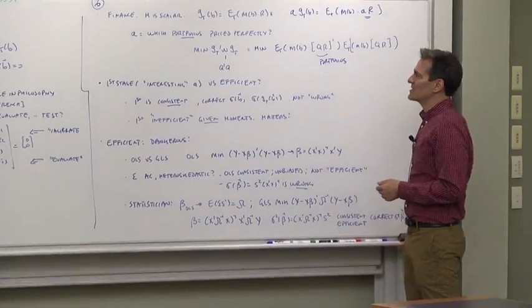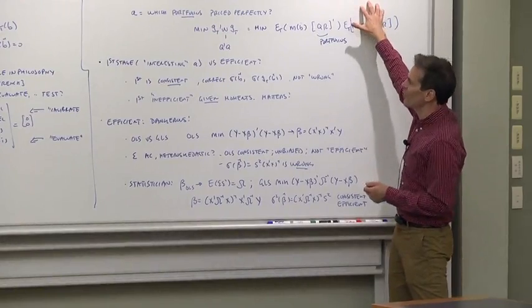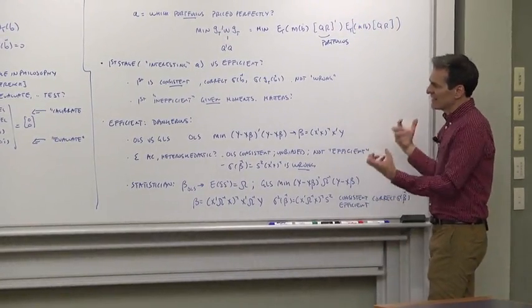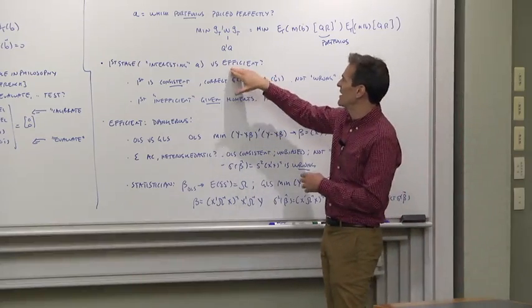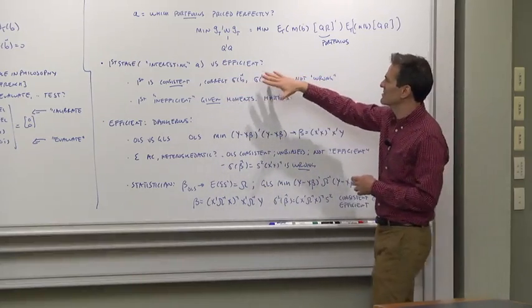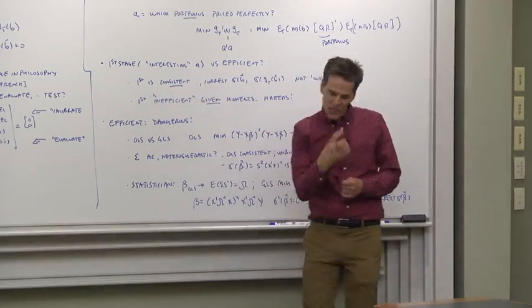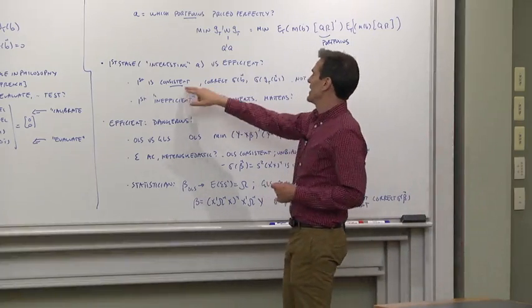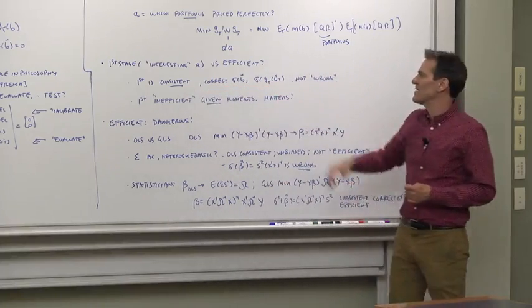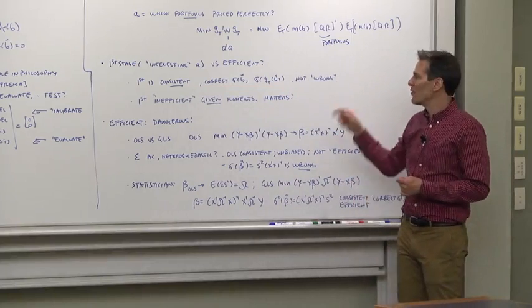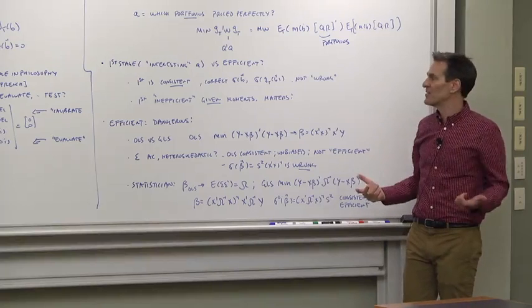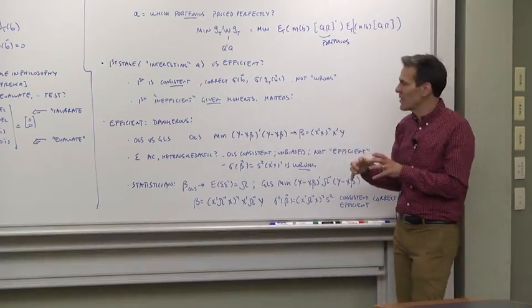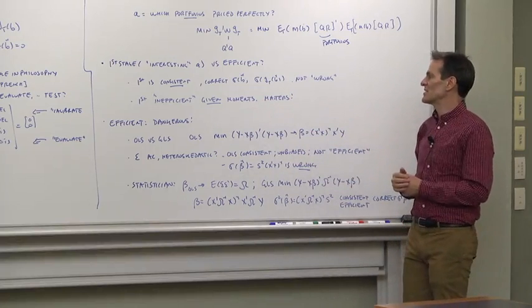Now let's think about the properties of choosing a portfolio that we're going to price perfectly versus the efficient thing which says let the statistical guide us, the statistical considerations guide us. The first stage, just choosing an arbitrary A matrix, is consistent. And the standard error formulas given by GMM are correct. There is nothing wrong with using an inefficient estimate. The only thing someone can complain about is that another way of doing it might have given you a more precise estimate.